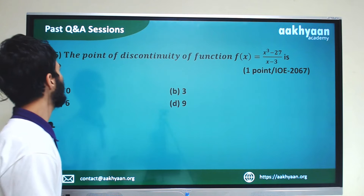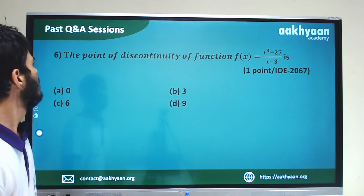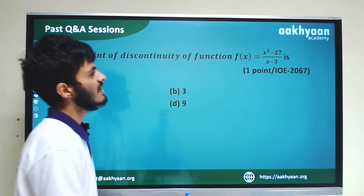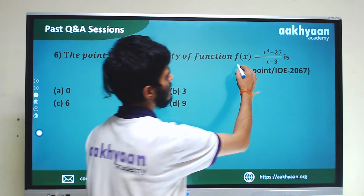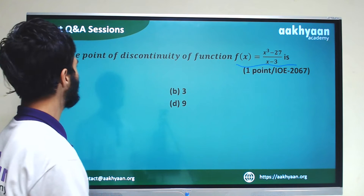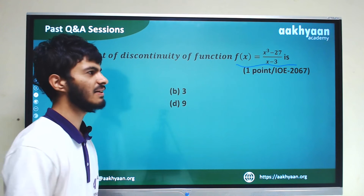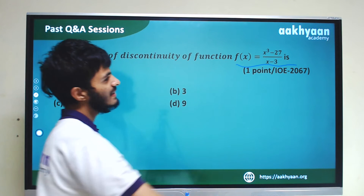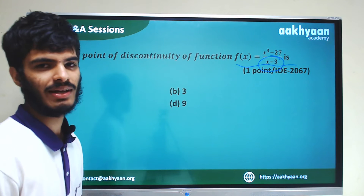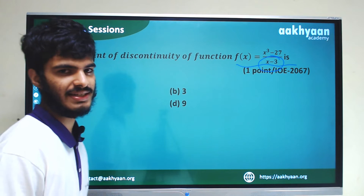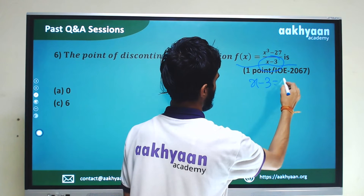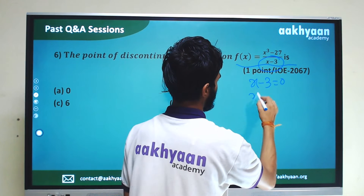In the sixth question, we are given: find the point of discontinuity of the function f(x) equals x³ minus 27 by x minus 3. The point of discontinuity is found by setting the denominator equal to zero: x minus 3 equals 0, so x equals 3.